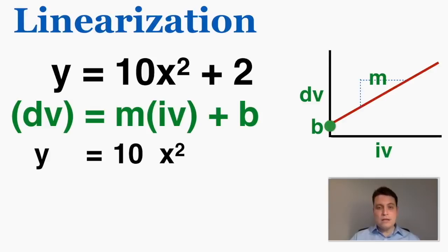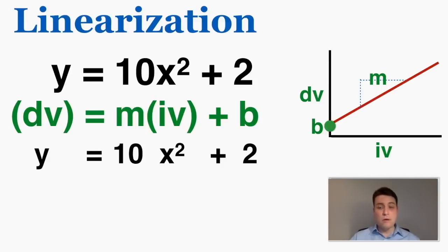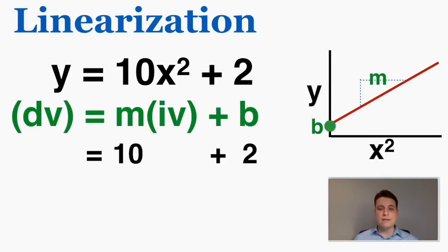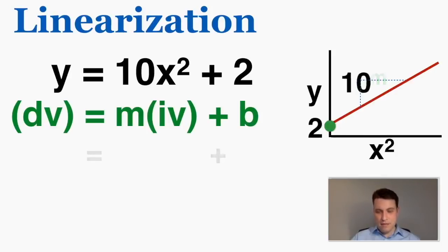I can see that b here is going to be equal to 2. So I matched up my function with the general equation of a linear line: if I put y on my y-axis and x squared on the horizontal axis instead of x, it will definitely be the case that my y-intercept will be 2 and my slope will be 10 for this particular function. So let's see what happens.